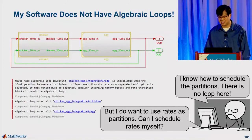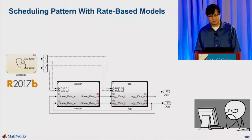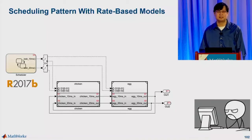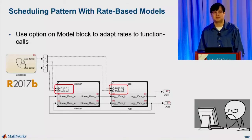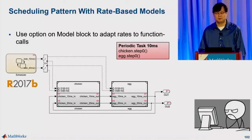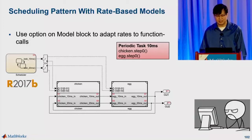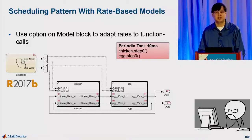We heard this concern. In our 2017B, we provide a new option on the model block for you to adapt rates to function calls. With this new option, you're now in full control. For example, in the periodic task of 10 milliseconds, you can make chicken execute before egg.